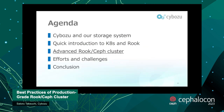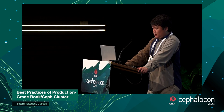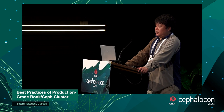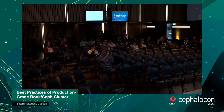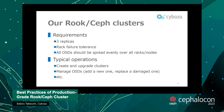Next is the advanced Rook-Ceph cluster — our cluster, the Cybozu cluster. Our Rook-Ceph cluster requirement is three replicas for both the RBD cluster and the RGW cluster, with rack failure tolerance — if we lose one rack we can save all data. All OSDs should be split evenly over all racks and all nodes. I'll show you the typical operation of a Ceph cluster in Rook — for example, creating and upgrading clusters, managing OSDs, and so on.